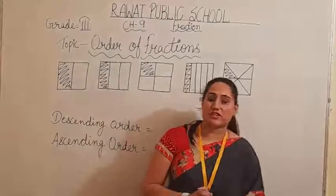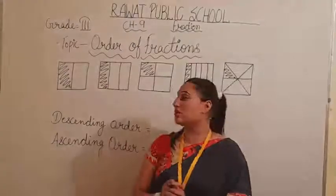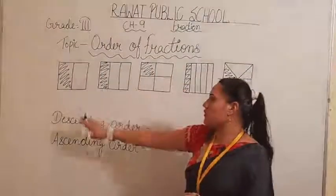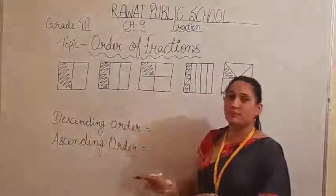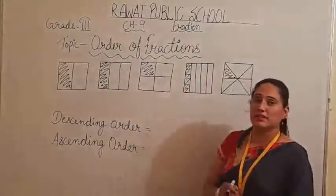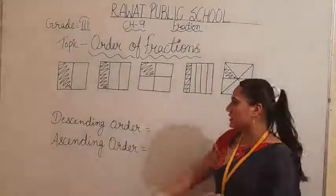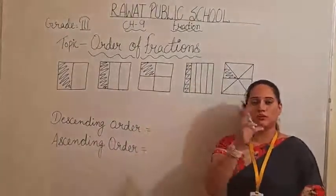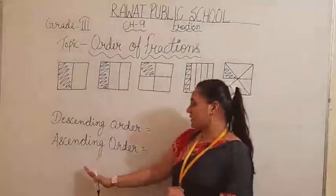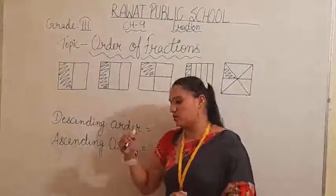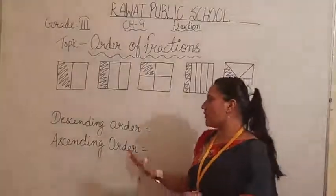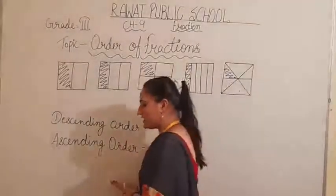In this lecture we are going to talk about order of fractions — in which order we are placing the fraction. Descending order means smallest to biggest and ascending order means biggest to smallest. These two we are going to write here.